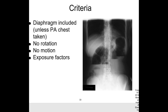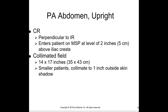The criteria include the diaphragm, unless a PA chest is taken — that's usually done on a three-way abdomen. The supine KUB includes the symphysis pubis, and on the upright abdomen you want to make sure you include the diaphragm. No rotation, no motion. The CR is perpendicular to the IR, entering the patient on the MSP at two inches above the iliac crest, 14 by 17, and for smaller patients collimate one inch outside the skin shadow.